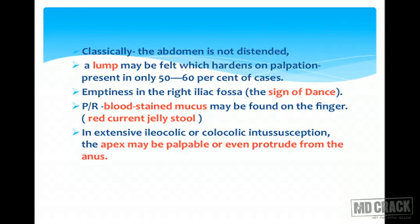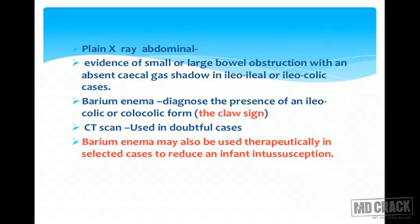Blood-stained mucus is also known as red currant jelly stool. In extensive ileocolic or colocolic intussusception, the apex may be palpable or even protrude from the anus. Plain X-ray abdomen reveals evidence of small or large bowel obstruction with an absent cecal gas shadow in ileocolic cases. Barium enema diagnoses the presence of ileocolic or colocolic form and is called the claw sign.